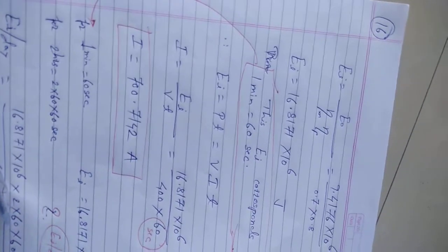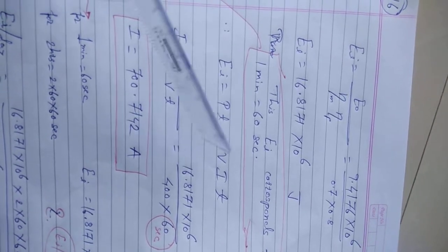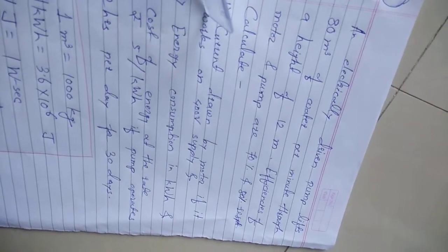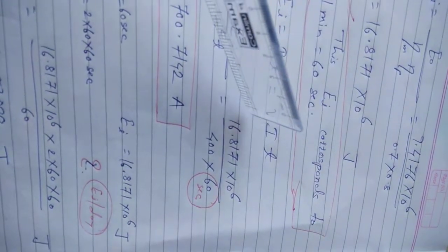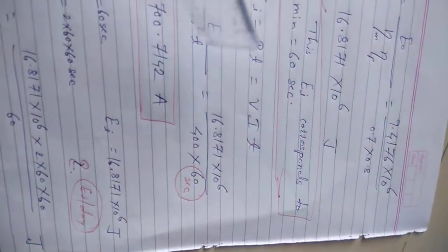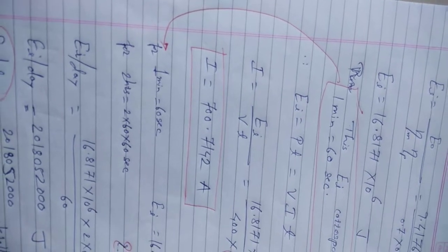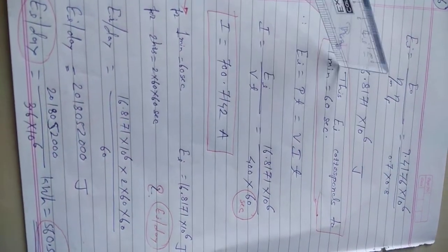To find the current, we use: input energy = power × time = V × I × t. The voltage is given as 440 volts and time is 60 seconds. So, current I = input energy (in joules) divided by voltage × time. This gives a current of approximately 700.71 amperes.